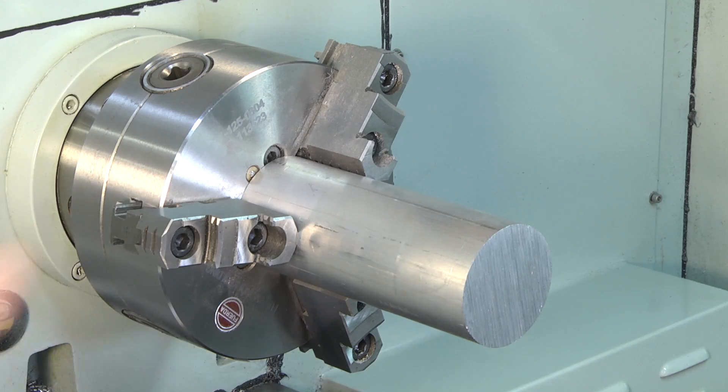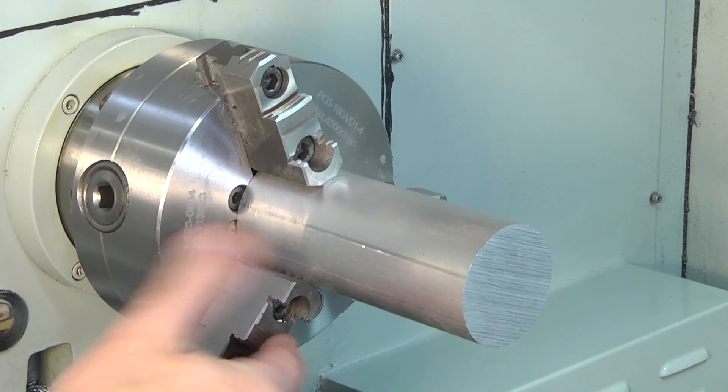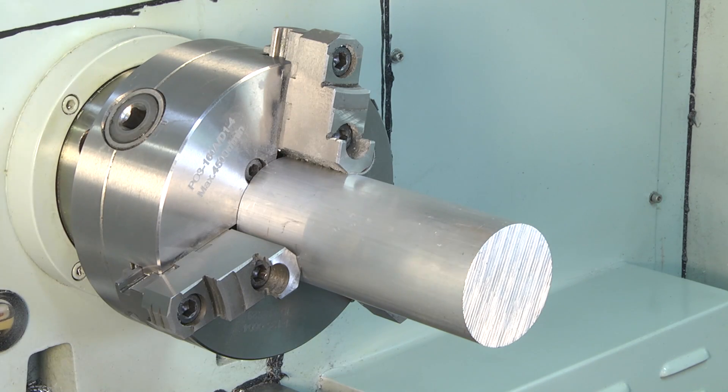Make sure the workpiece is running concentric, and then measure if the length of material protruding is correct. It has to be at least 100mm.